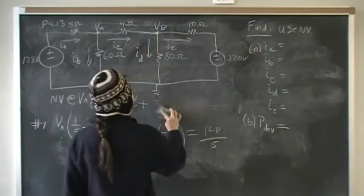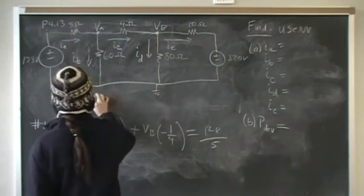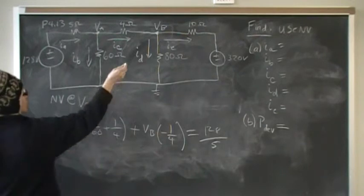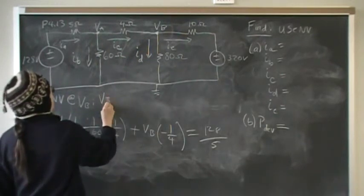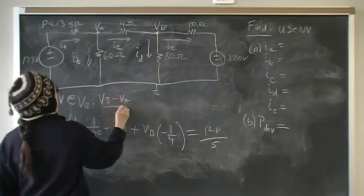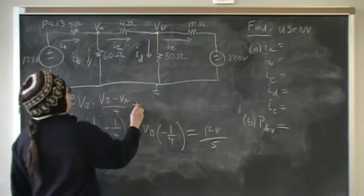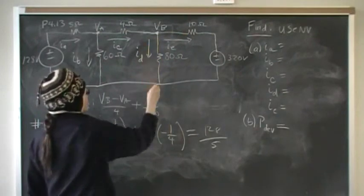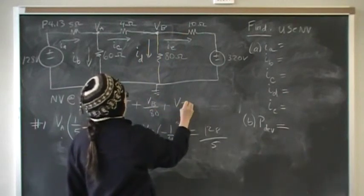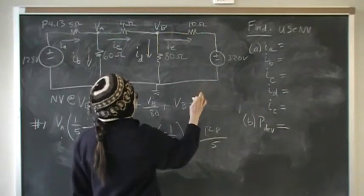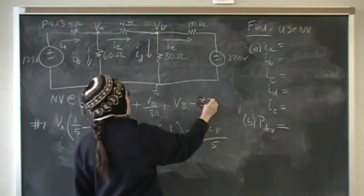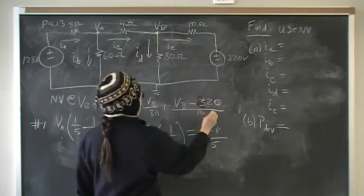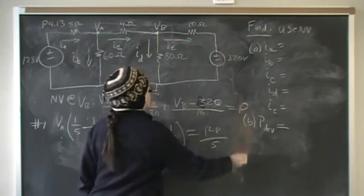Now we're going to do the same thing at VB. Node voltage at VB, this branch current is going to be VB minus VA over 4, plus VB over 80, that represents that branch current, plus VB minus 320 over 10. The sum of those three branch currents should equal zero.